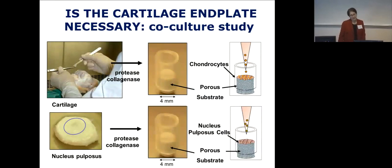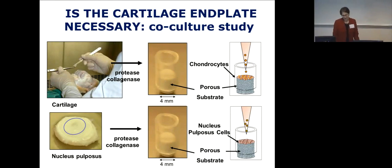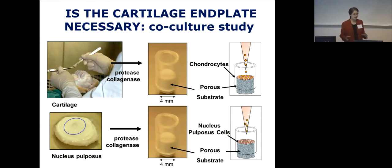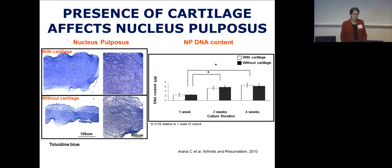We then asked whether we could skip generating the cartilage layer — it would be much simpler and faster. We ran an experiment keeping chondrocytes and nucleus pulposus cells separate in co-culture without contact. The nucleus pulposus tissue formed in the presence of cartilage was much more abundant, thicker, and more robust than tissue generated in the absence of cartilage, as shown in histological sections.